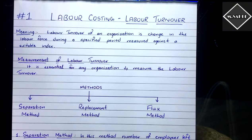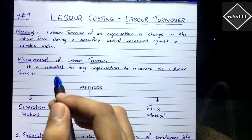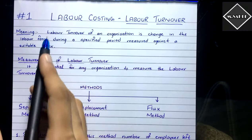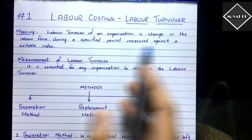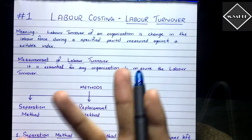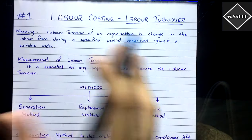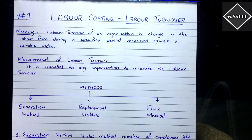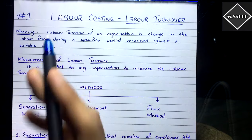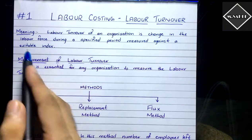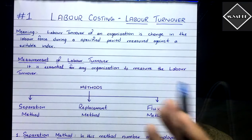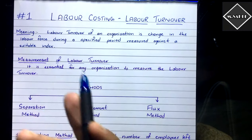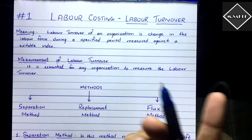The first topic I'm going to discuss in this chapter is labor turnover. The meaning of labor turnover is very simple: it is the change in the labor force during a specified period, measured against a suitable index. Labor turnover is nothing but the movement of employees — how many employees have joined the organization and how many have left, mostly calculated for a year.